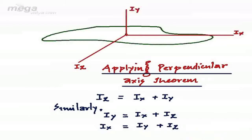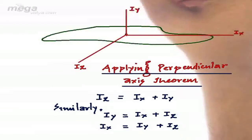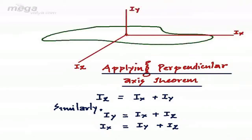We are not going to use any algebraic method. Simply, the moment of inertia along any perpendicular axis will be the sum of the moment of inertia along the two given axes.